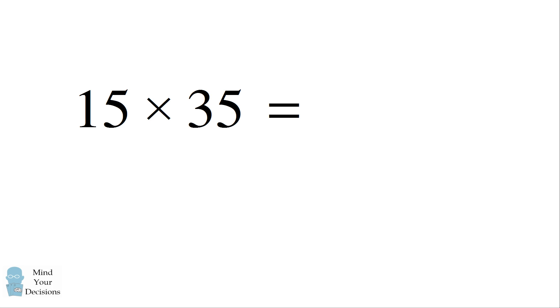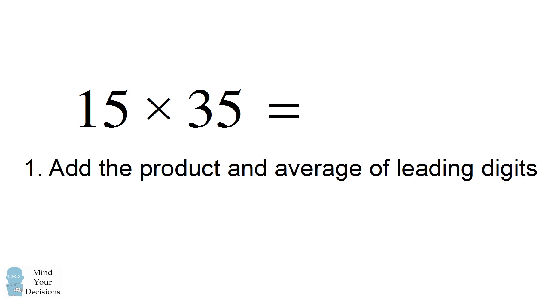Let's say you want to multiply 15 by 35. Both the numbers 15 and 35 have a last digit of 5, so there's a quick way we can solve this. The steps are to add the product and average of the leading digits of the number, we multiply that result by a hundred, and then we add 25. So let me go over these steps in detail.